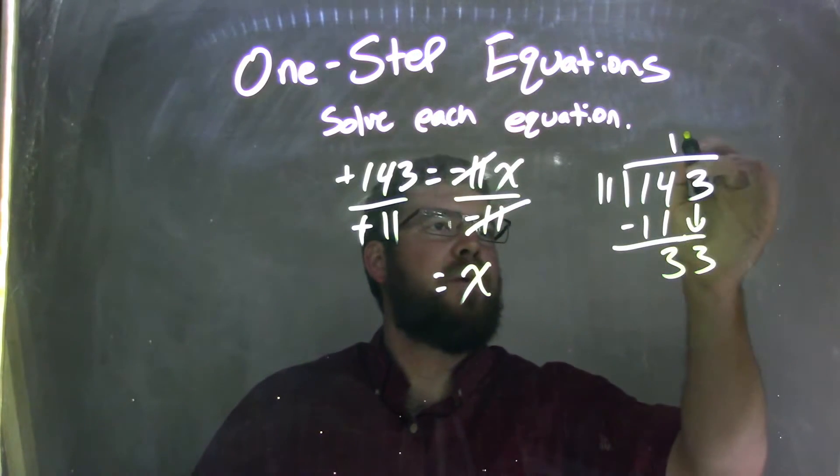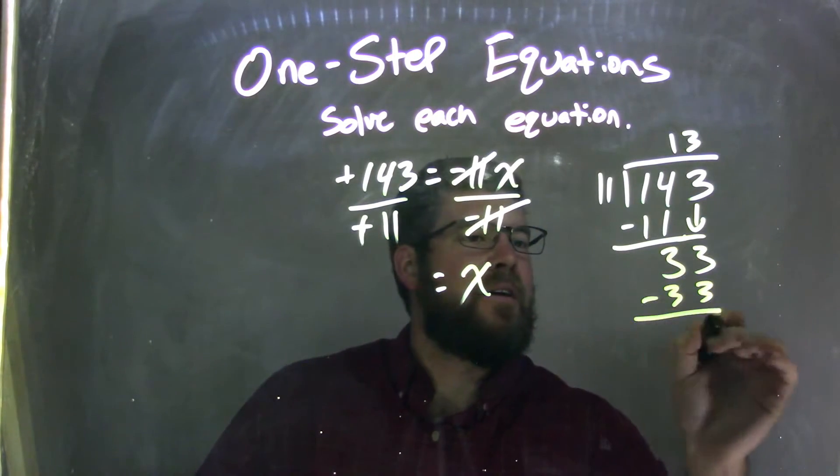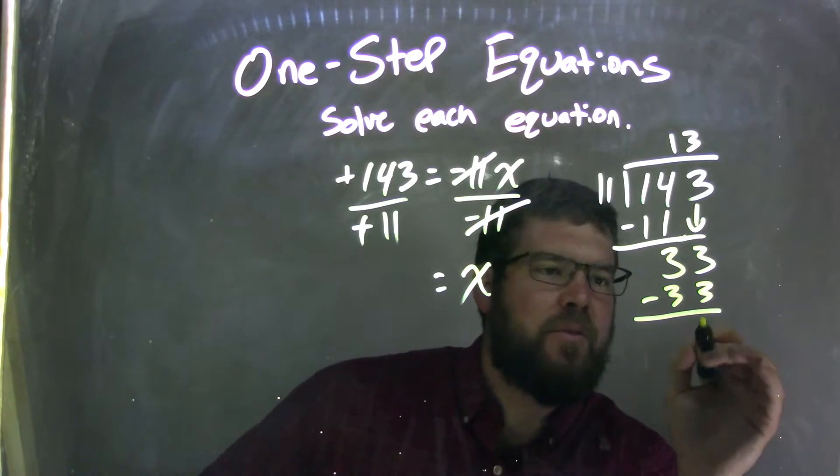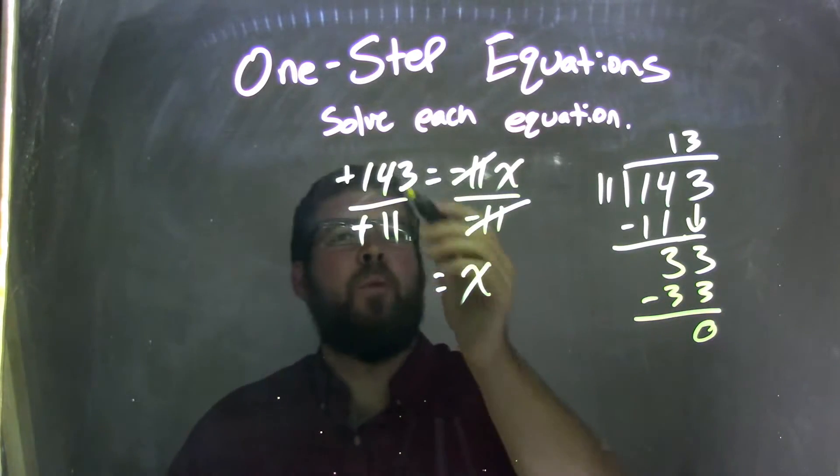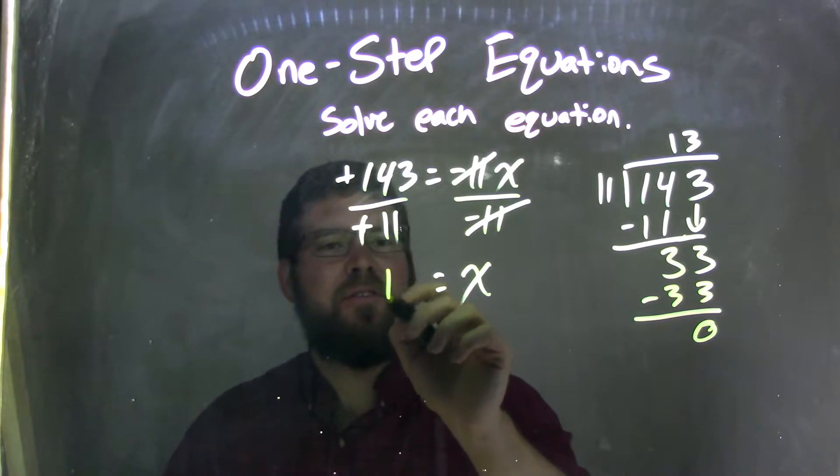11 goes into 33 three times. 3 times 11 is 33. They cancel, 33 minus 33 is 0. Now we're done. So 143 divided by 11 is just 13.